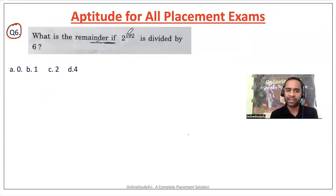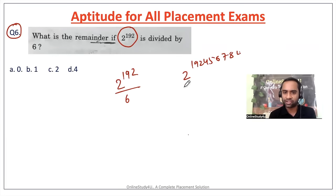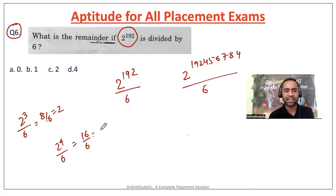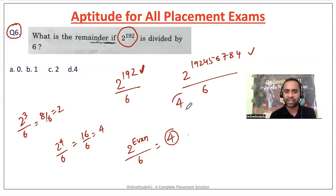Question number six: what is the remainder when 2 to the power 192 is divisible by 6? Check: 2³ = 8, and 8 divided by 6 gives remainder 2. 2⁴ = 16, and 16 divided by 6 gives remainder 4. So when 2 to an even power is divided by 6, the remainder is always 4. Since 192 is an even number, the remainder is 4 — option D is the correct answer.